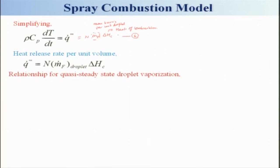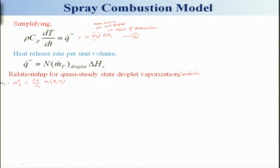What we need to do now is relate the quasi-steady state droplet vaporization and combustion into this equation. We know that f = ρ·α/(r_s) · ln(B_c + 1), and since I need ṁ_f, the area must be multiplied in. So ṁ_f = f · 4π·r_s², which gives ṁ_f = 4π·r_s²·ρ·α/r_s · ln(B_c + 1).